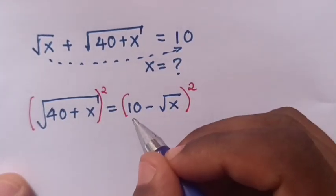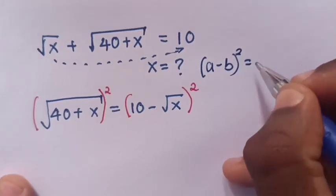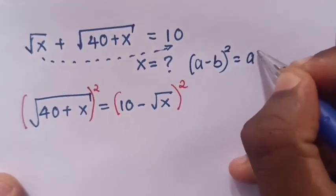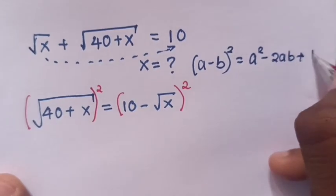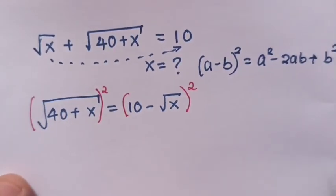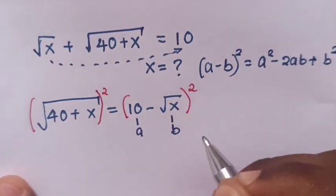From the right side of the equation, we apply the rule (a minus b) squared equals a squared minus 2ab plus b squared, where 10 is a and square root of x is b.